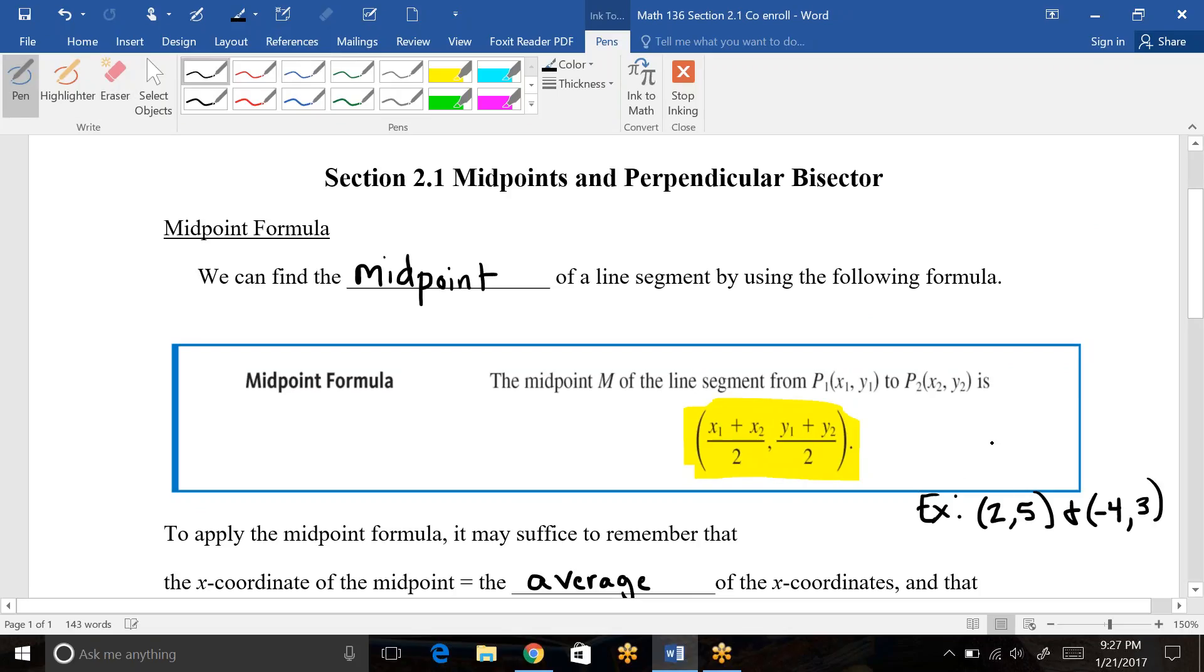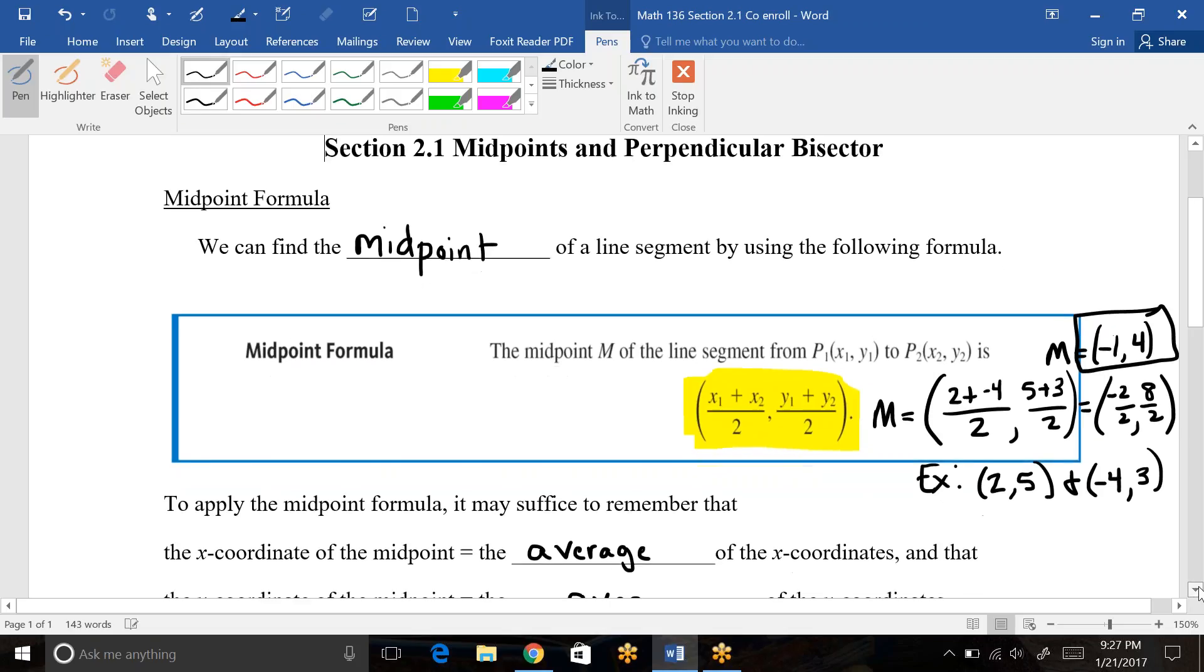To use the midpoint formula, I would add the x's together. So my midpoint, which we usually call a capital M, is (2 + (-4))/2 and then (5 + 3)/2 for the y's. So the midpoint is -2/2 and 8/2, and then we just see if we can reduce these. So the midpoint would actually be (-1, 4) for this example. Just to kind of show you how the formula works, it's pretty basic, pretty easy.